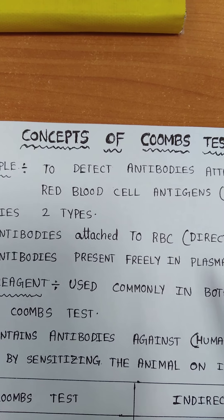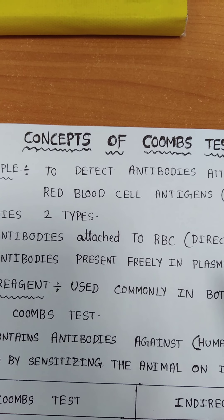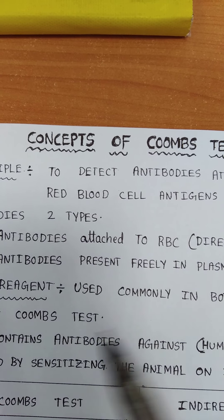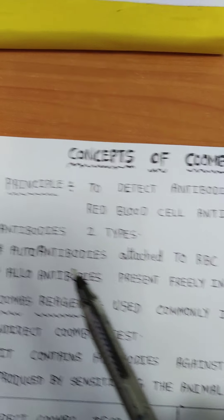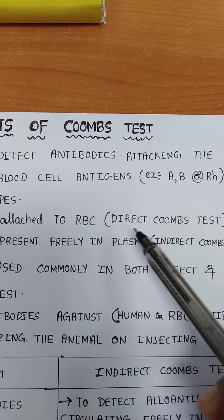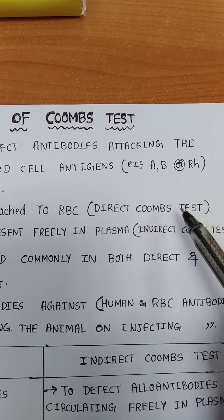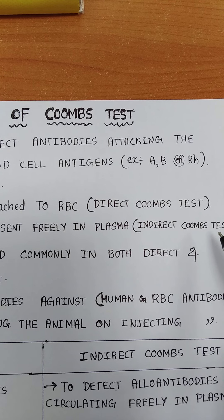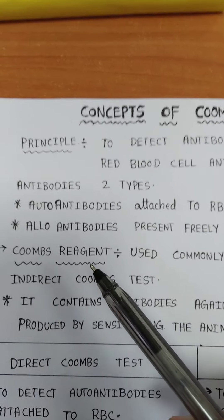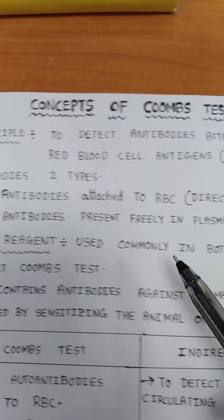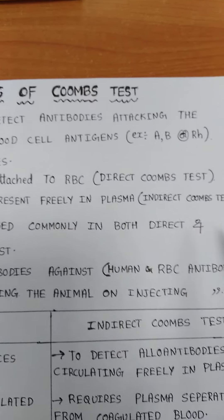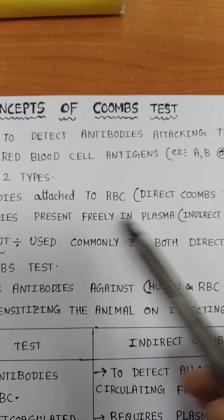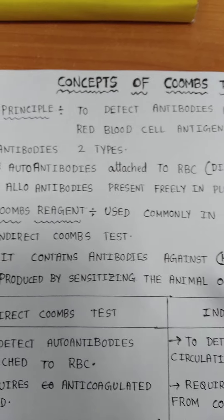Alloantibodies are present in plasma and will destroy the donor's RBCs — they will not destroy one's own RBCs. The direct Coombs test is used to detect autoantibodies, whereas the indirect Coombs test is used to detect alloantibodies. The Coombs reagent is used commonly in both the direct and indirect tests.